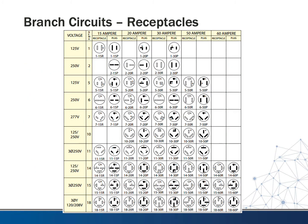This table shows the standard NEMA outlet and plug configurations. Down the left side is the voltage needed — single phase and three phase. Across the top is the maximum amperage that the plug would be rated for. There's a NEMA number associated with each row, and in each column there are double columns under each heading: on the left is the receptacle — what would be in or on the wall — and the plug is what actually goes on the end of the cord.